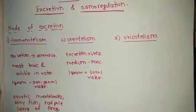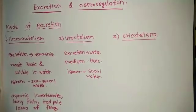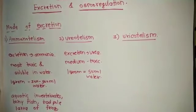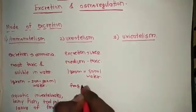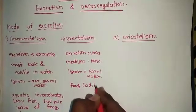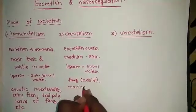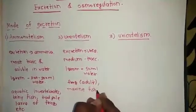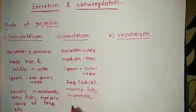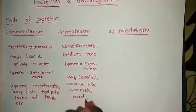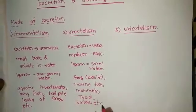Ammonia combines with CO2 to form urea via the ornithine cycle in the liver. Mainly ureotelic animals are frogs in adult form, cartilaginous fish, mammals, turtles, etc.